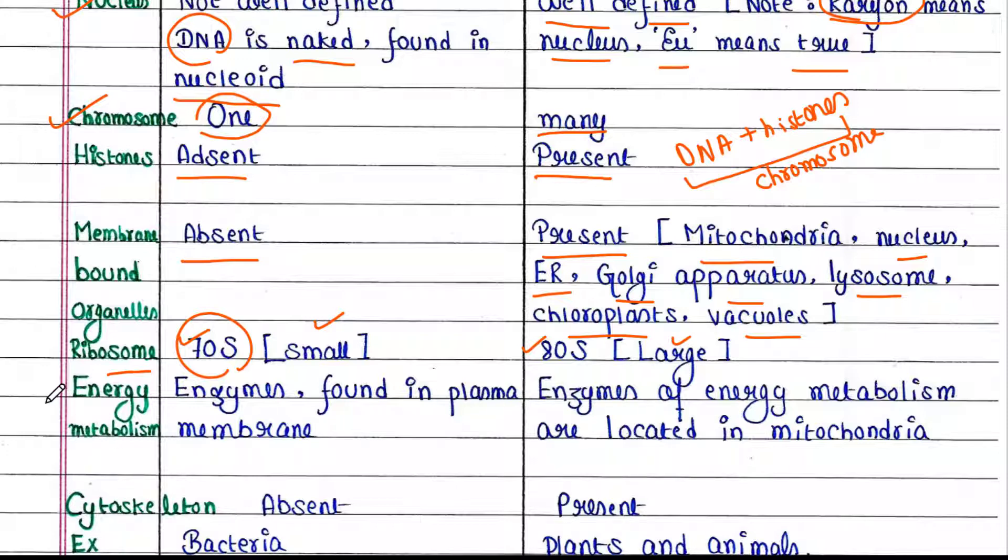Next is energy metabolism. Any cell conducts energy metabolism via the electron transport chain, or ETC. To undergo ETC, a cell requires many enzymes.